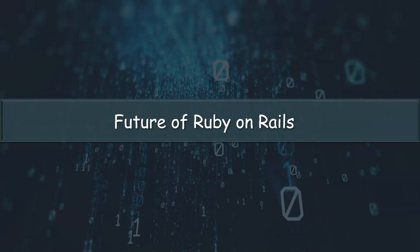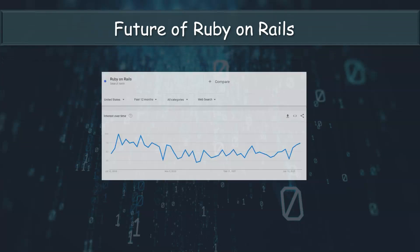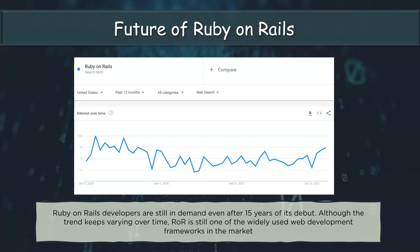Now let's look at the future of Ruby on Rails. Rails-based businesses benefit from faster delivery times and an agile development methodology. GitHub, Airbnb, Zendesk, Shopify, Basecamp, Twitch, and Cookpad are some of the top firms that have adopted Ruby on Rails. According to a recent LinkedIn search, more than 3,400 new Ruby on Rails jobs were listed in the United States alone. The high wages that Ruby on Rails developers earn show that Ruby knowledge is something that corporations are ready to invest in, opening up new job possibilities.